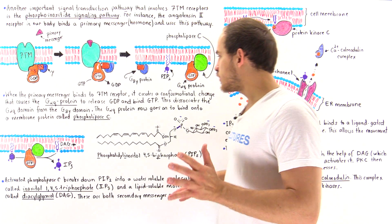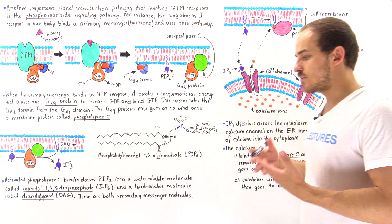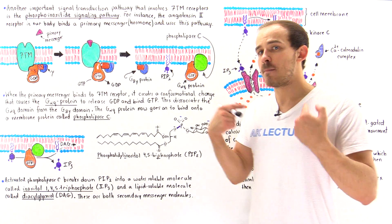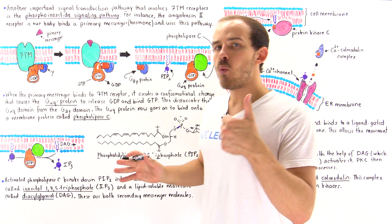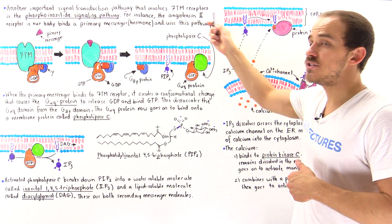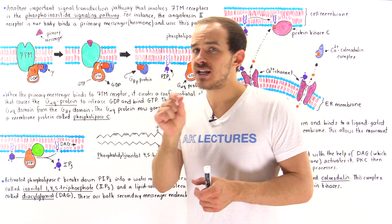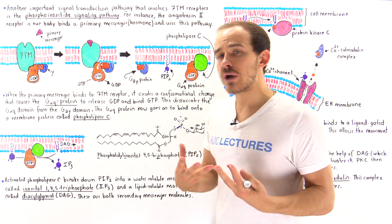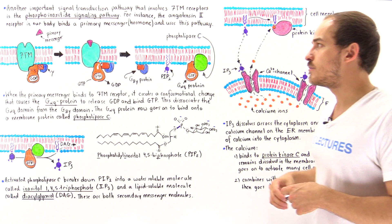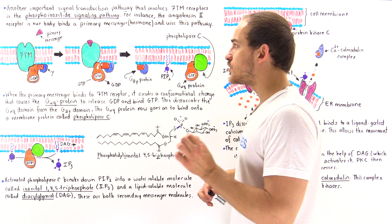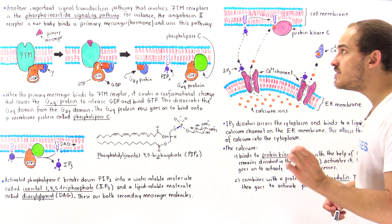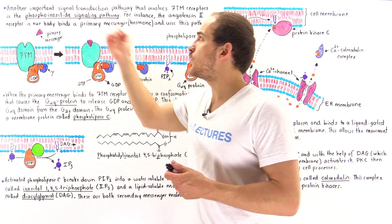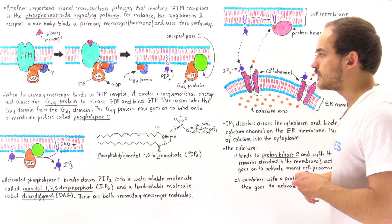Before we take a look at the details of this particular signal transduction pathway, what's an example of a G-coupled protein receptor inside our body that uses this pathway? One common example is the angiotensin 2 receptor. This is a G-coupled protein receptor that uses this pathway to regulate blood pressure inside the cardiovascular system. So we have a primary messenger, a peptide hormone known as angiotensin, that binds onto the angiotensin 2 receptor and initiates this phosphoinositide signaling pathway.